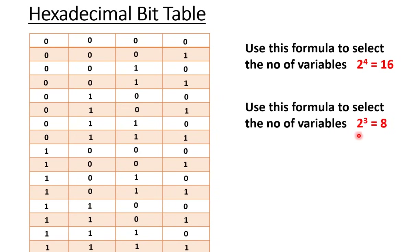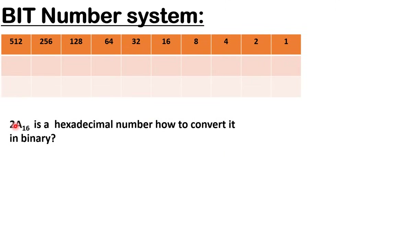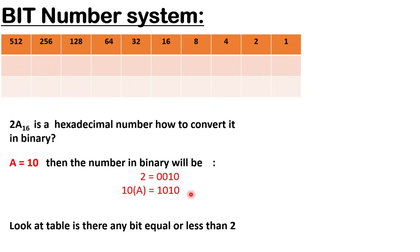Here is an example: convert hexadecimal 2A to binary. For the digit 2 — look at the table: is there any bit equal to or less than 2? Yes, 2 is there. So we turn on the bit for 2 and turn off all other bits. The binary representation of 2 is 0010.